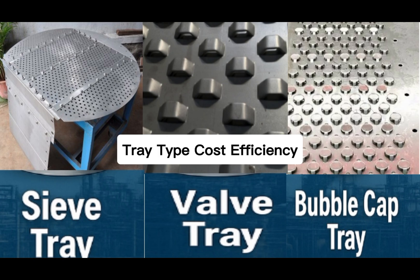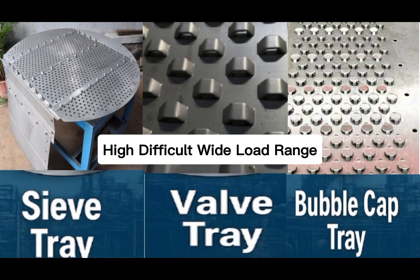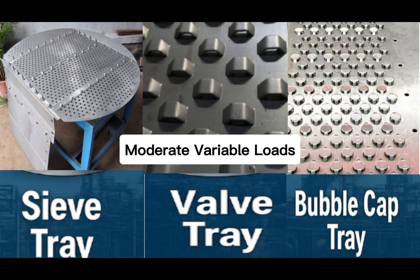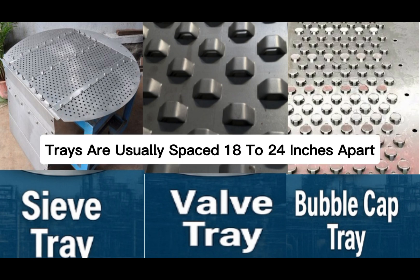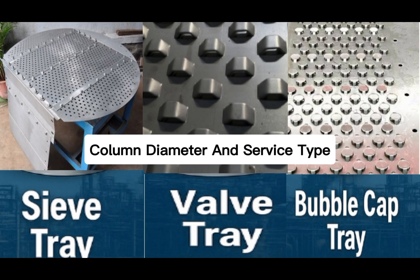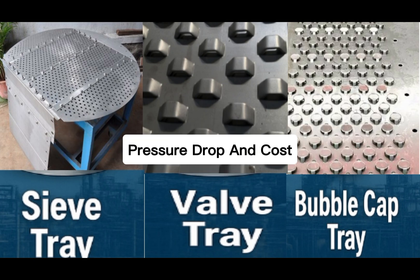In summary: bubble cap trays have high cost, high efficiency, and are difficult to maintain but suit a wide load range; sieve trays have low cost, moderate efficiency, and are easy to maintain, best for simple systems; valve trays offer medium cost, high efficiency, and moderate maintenance, ideal for variable loads. Trays are usually spaced 18–24 inches apart, depending on vapor flow, column diameter, and service type. Design engineers always balance between efficiency, pressure drop, and cost.